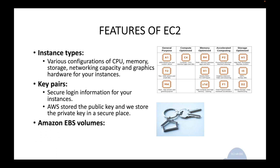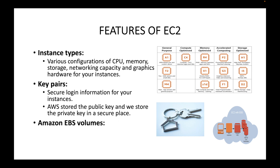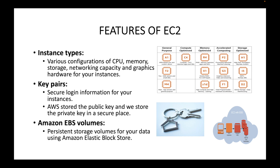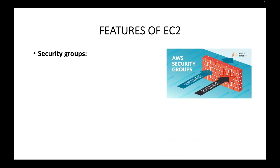Then you have Amazon EBS volumes — this is your storage, the physical storage. How much hard disk capacity do you want for your server? Maybe 100 GB, 200 GB, 300 GB, or 50 GB — the storage capacity for your servers can be defined in your Amazon EBS volume. This is your persistent storage for your data, and it makes use of Elastic Block Storage, which is block-type storage.